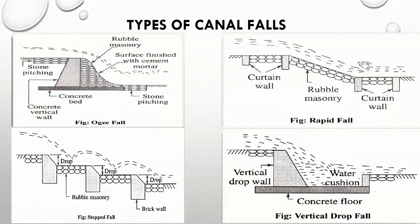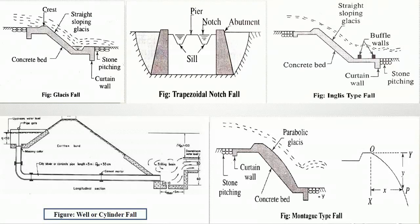The different types of canal falls include: OG fall, glassy fall, trapezoidal notch fall, Inglis type fall, well or cylinder fall, and Montague type fall.